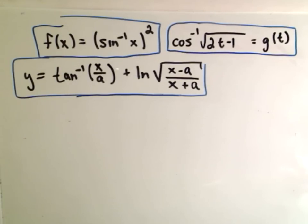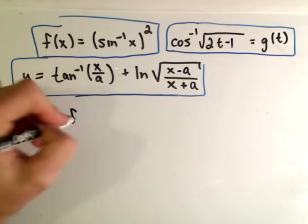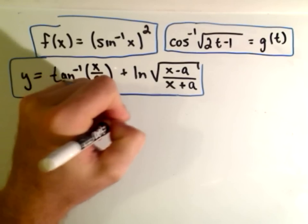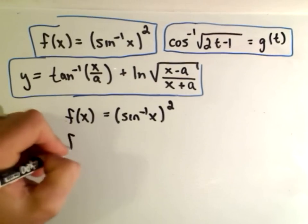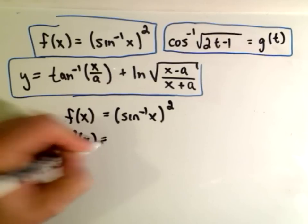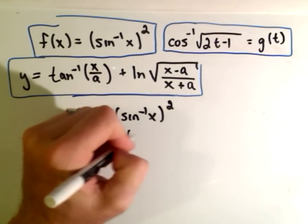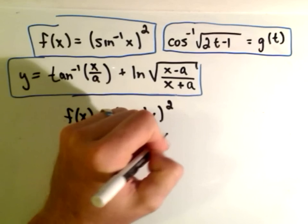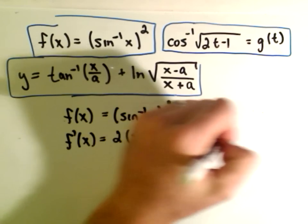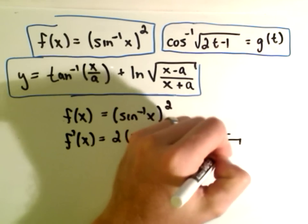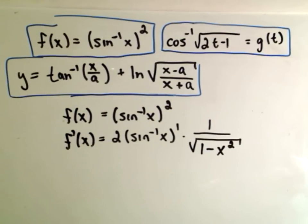So the first one I'm going to do here will be the f of x one. So it says if f of x is inverse sine of x squared, if we take the derivative of that, we'll have to use the chain rule. So the two comes out front, we leave the inside part alone, take one away from the exponent, and then we have to multiply by the derivative of the inside, and the derivative of the inside is just going to be